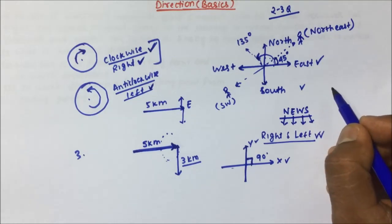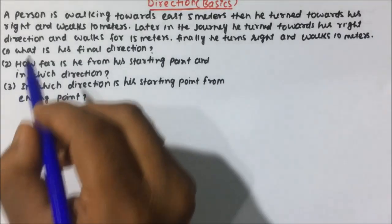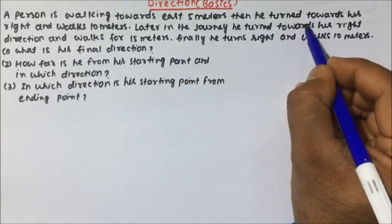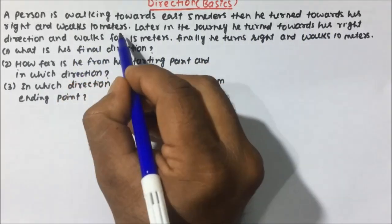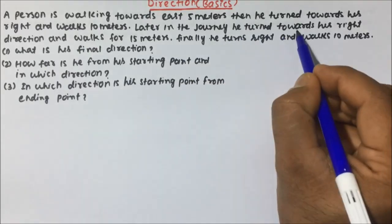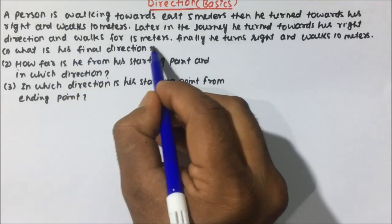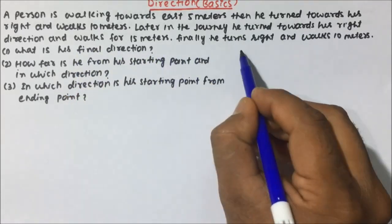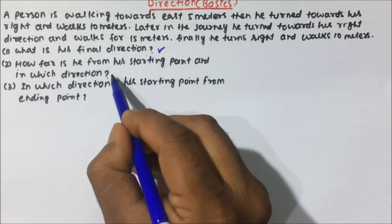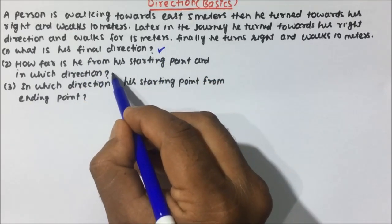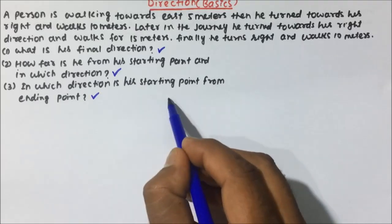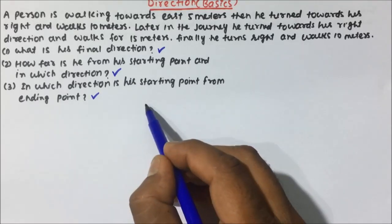Let us start with question number one. A person is walking towards east 5 meters. Then he turns towards his right and walks 10 meters. Later in his journey, he turns towards his right direction and walks 15 meters. Finally, he turns right and walks 10 meters. What is his final direction? How far is he from his starting point and in which direction? In which direction is his starting point from the end point?